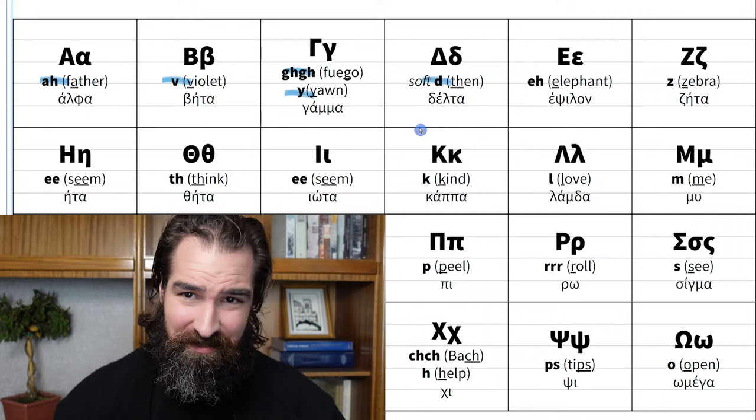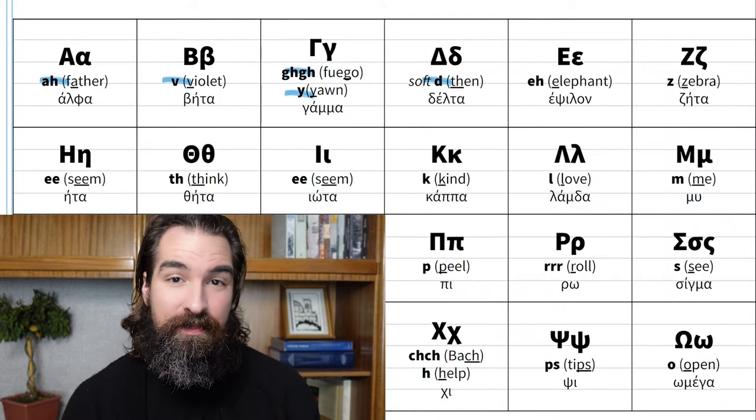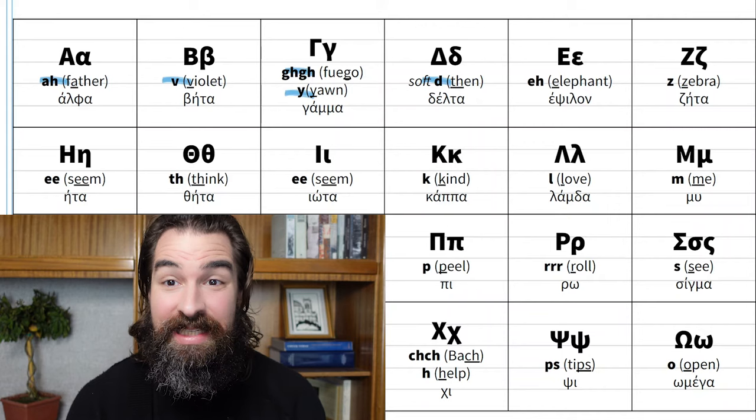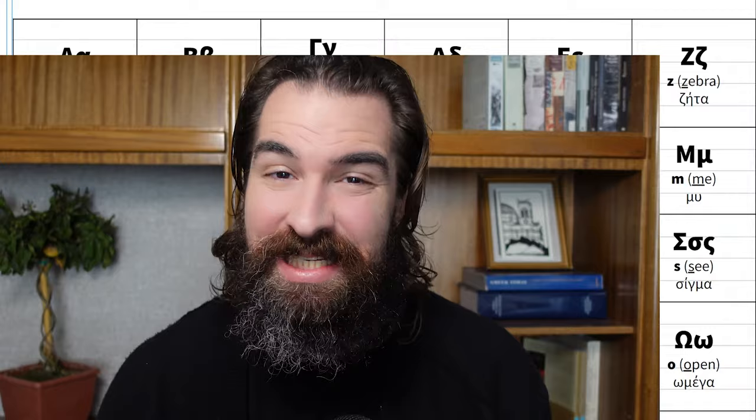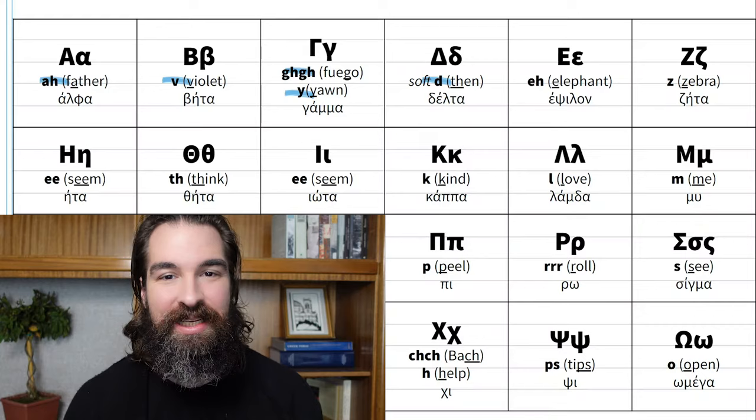The fourth letter is delta. Delta makes a soft D sound — not a hard 'd,' but a soft 'th'-like delta. When you make a hard D, your tongue touches behind your teeth — your hard palate. When you make this delta sound, your tongue touches the bottom of your top teeth. Delta is a soft D like in 'then.'